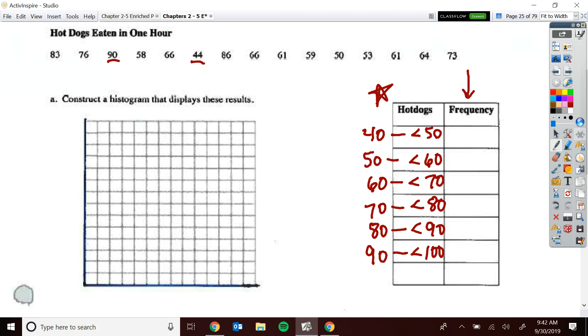Alright. So now we start tallying their frequency. Okay. So I'm just going to start dropping these things in the bar. I got 83. And so I'm just going to put a little mark that goes in that bar. 76, 90, 58, and so on. So I'm just putting all of these things, dropping those tallies in the section they're going to go in. 86, 66, 61, and so on. 50, 53, 61, 64, and 73. So I think I've got all of those here.